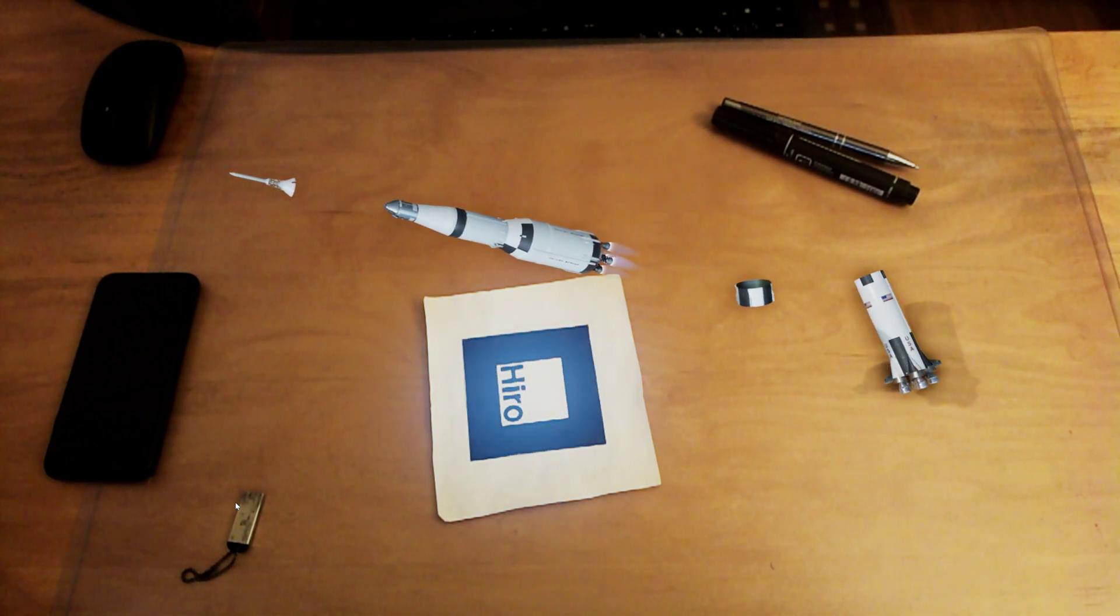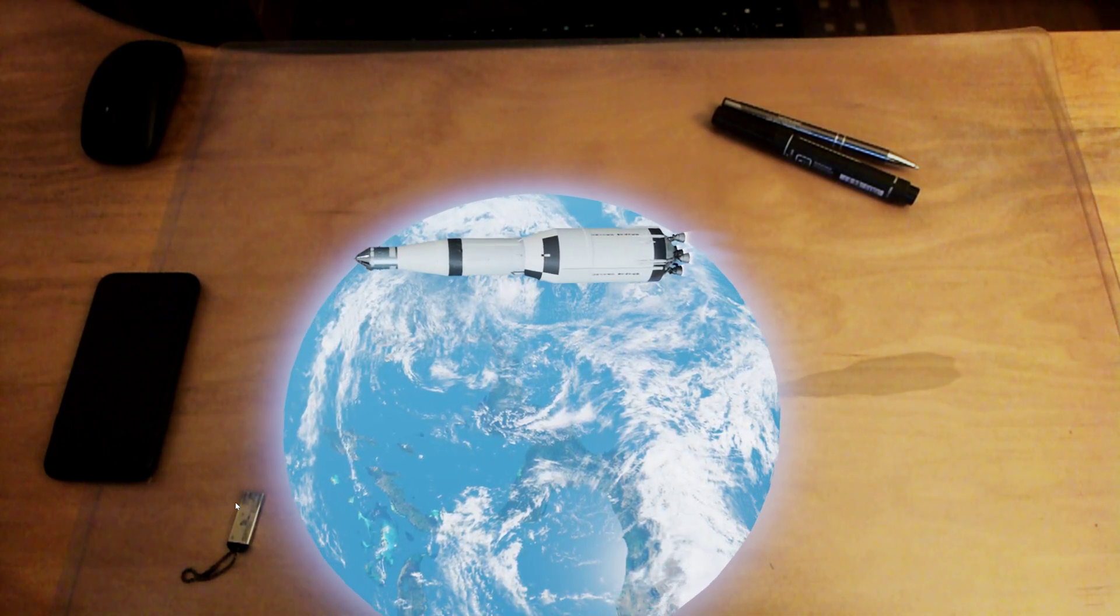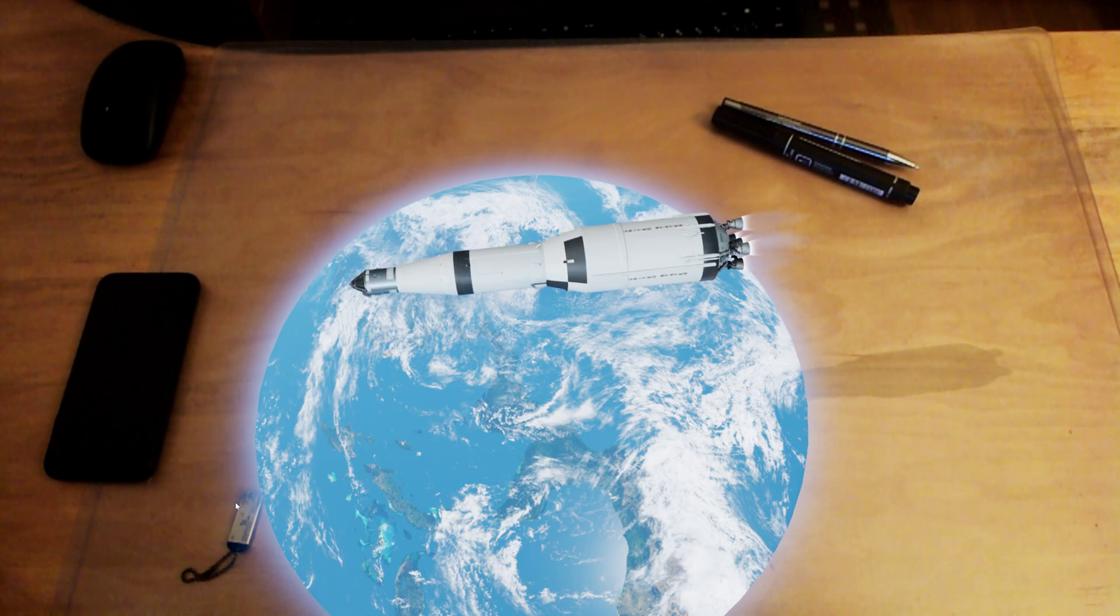The interstage ring provided a small amount of thrust to settle the fuel in the tanks so that the stage 2 rockets could fire and get the Saturn V into a low Earth orbit. It also fell away when empty.